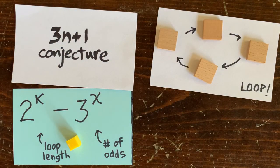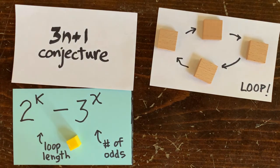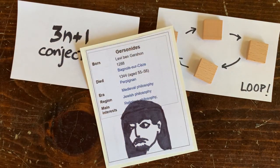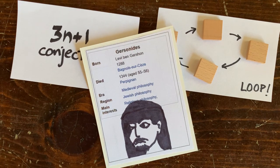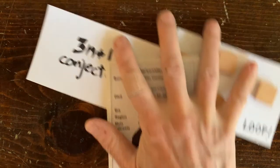What about other solutions to 2 to the k minus 3 to the x equals 1? During the Middle Ages, someone named Gersonides peered all the way down the number line and announced that there are no other solutions. I didn't look at his proof, but I figured if this guy could do it in the Middle Ages, I can give it a try.